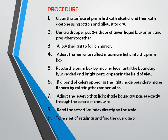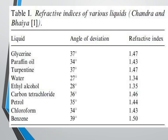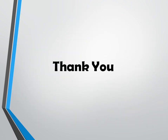Take three sets of readings and find the average. Example refractive index values: glycerine 1.67, paraffin oil 1.43, turpentine 1.47, water 1.34, ethanol 1.35, carbon tetrachloride 1.46, petrol 1.44, chloroform 1.43, and benzene 1.50. This concludes our discussion on physicochemical properties and the refractive index of substances. Thank you.